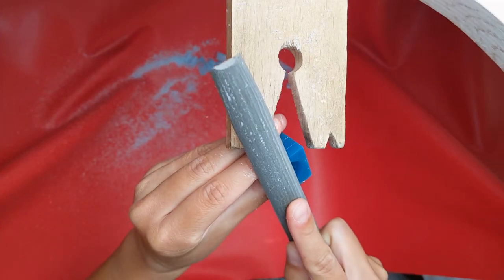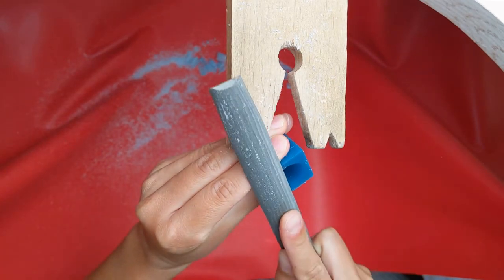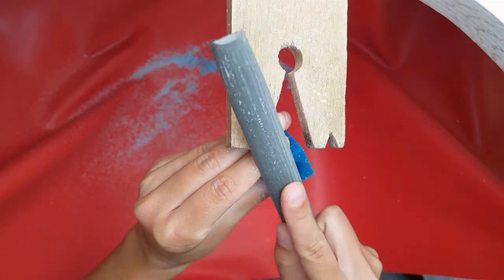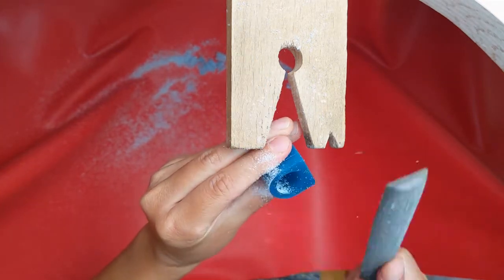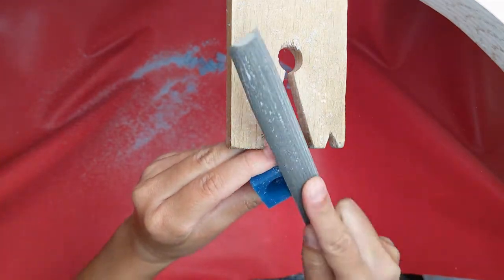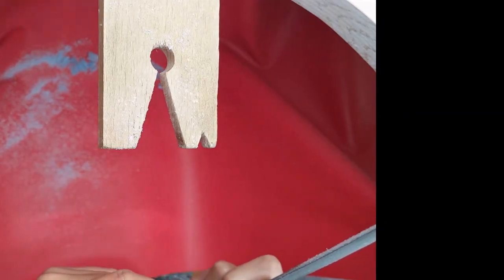So to taper a ring band you first start filing the complete bottom edge of the ring. And the next file stroke you go a little bit higher, and every file stroke you go a little bit farther up the ring.